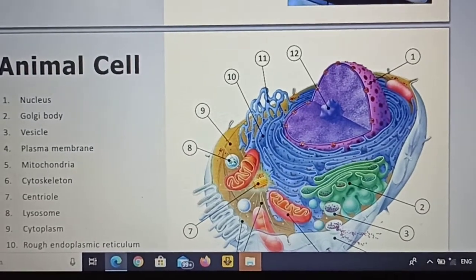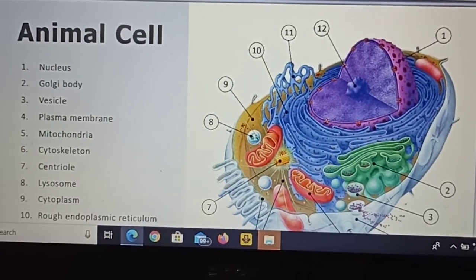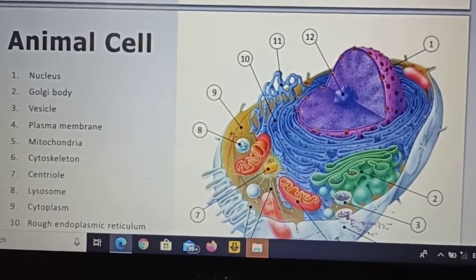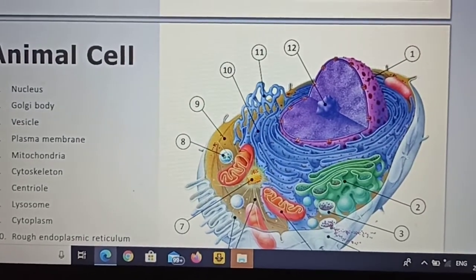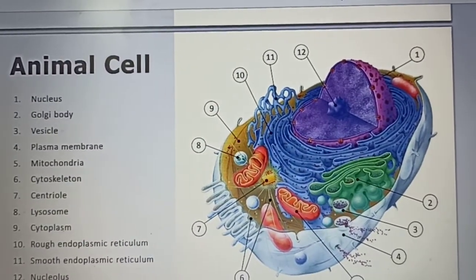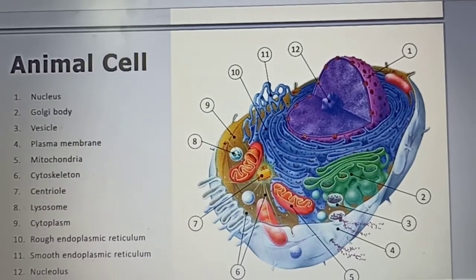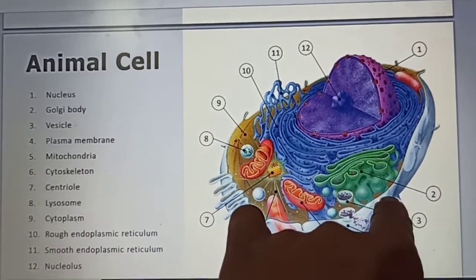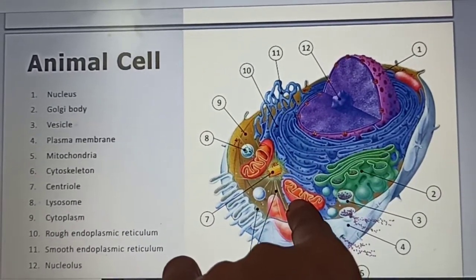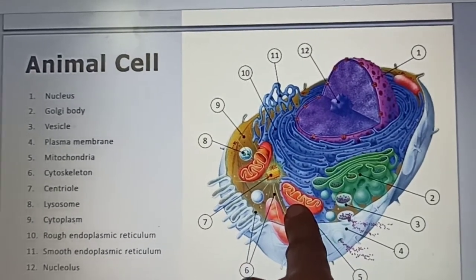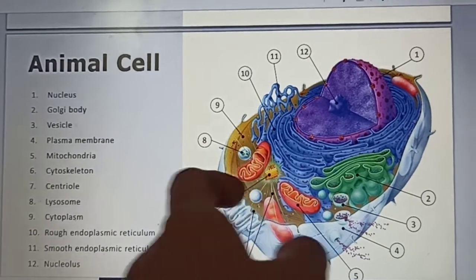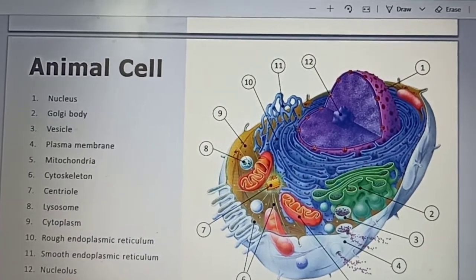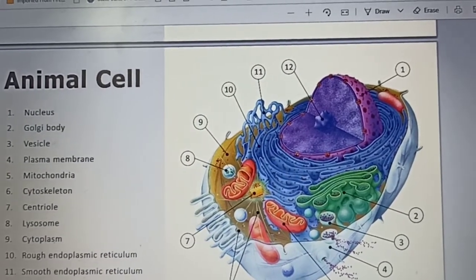That is all for today. We studied Golgi body, mitochondria, lysosomes, and vacuoles. Remember each and every organelle with its functions. Golgi body transfers materials from the endoplasmic reticulum to the cell. Lysosomes are nothing but suicidal bags — they help in digestion. Thank you.